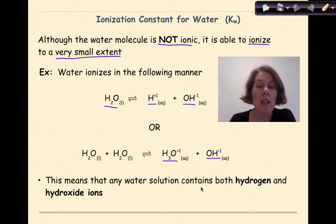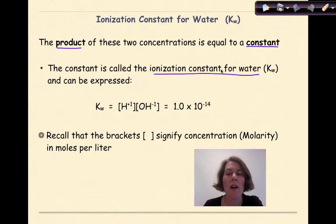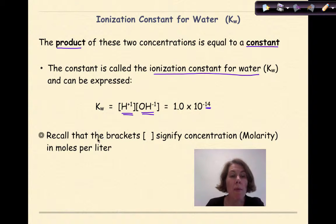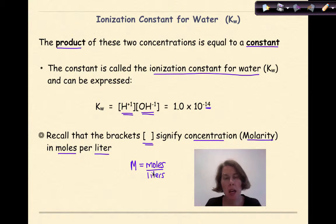This means that any water solution contains both hydrogen and hydroxide ions. The product — multiplying these two concentrations — is equal to a constant called the ionization constant for water, and can be expressed as Kw equals the concentration of hydrogen ions times the concentration of hydroxide ions, which equals 1 times 10 to the negative 14. Remember, the brackets signify concentration, which is molarity in moles per liter. Molarity, capital M, is equal to moles over liters, which we'll refer back to in future videos.